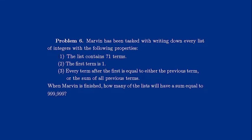Problem 6. Marvin has been tasked with writing down every list of integers with the following properties: 1. The list contains 71 terms. 2. The first term is 1. 3. Every term after the first is equal to either the previous term or the sum of all previous terms. When Marvin is finished, how many of the lists will have a sum equal to 999,999?